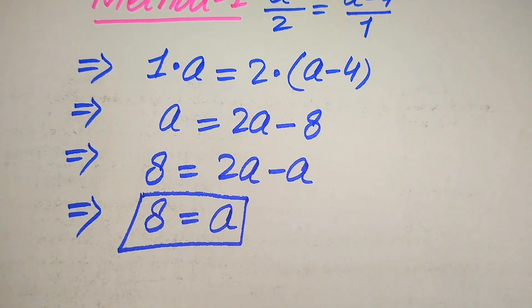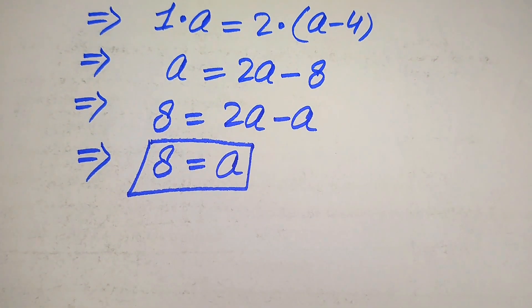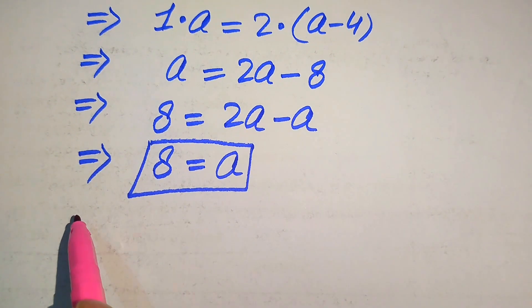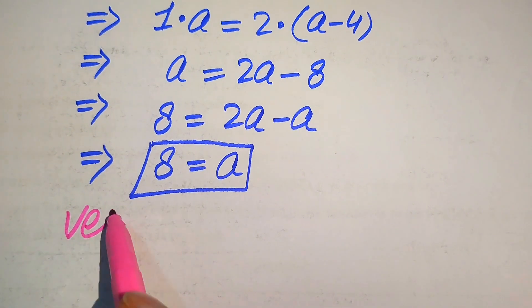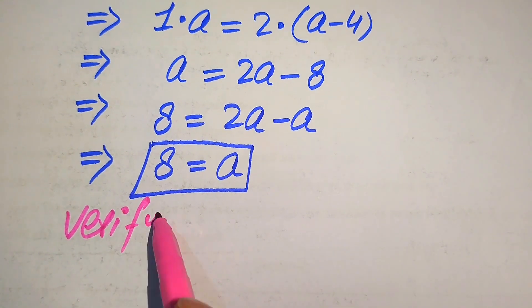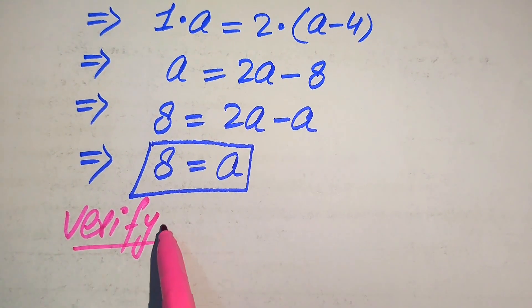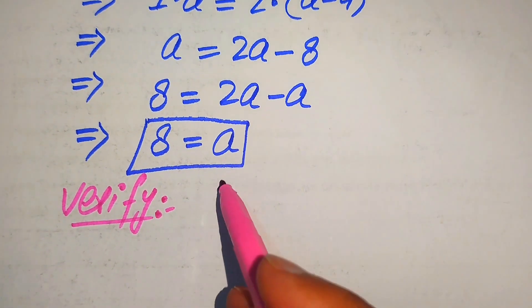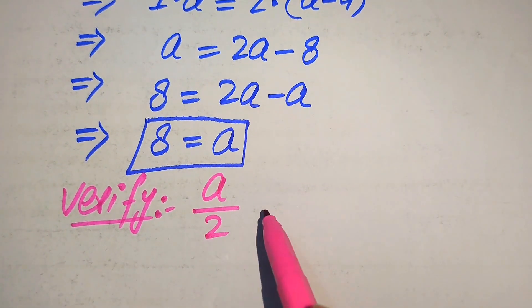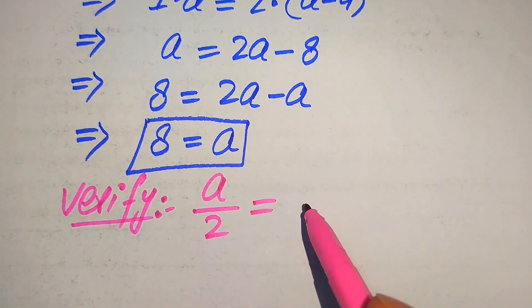In the next step we need to verify this root and check whether it is a solution or an extraneous root of the given equation. For verification, we copy down the given equation: a over 2 is equals to a minus 4.